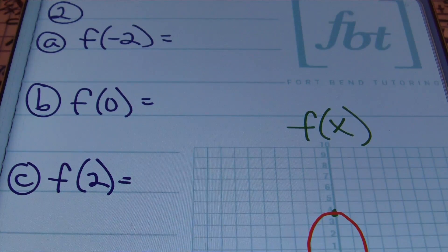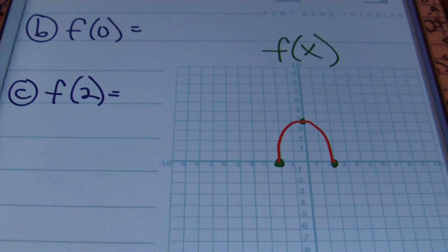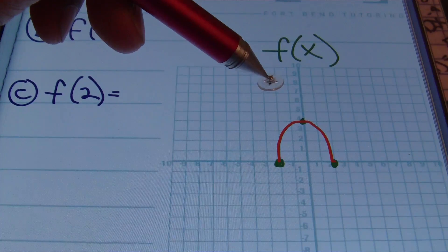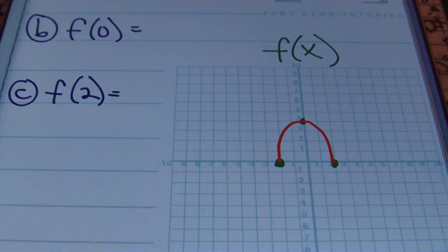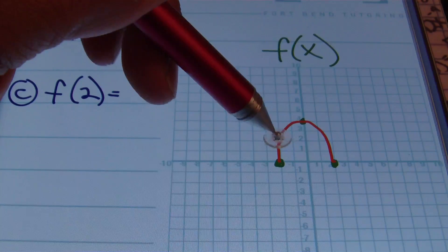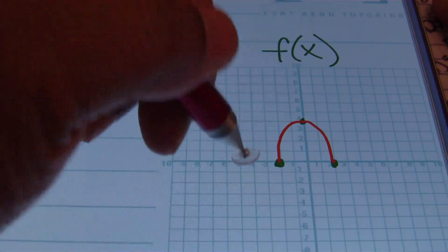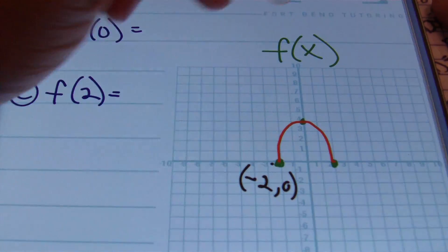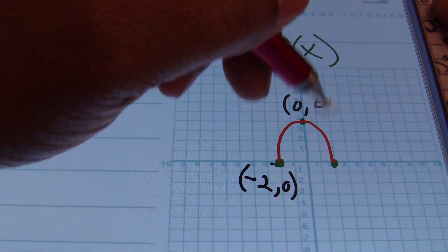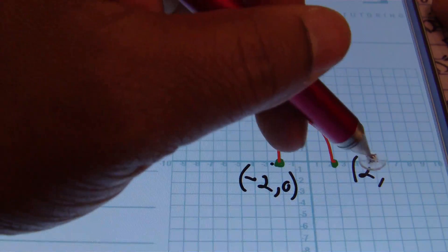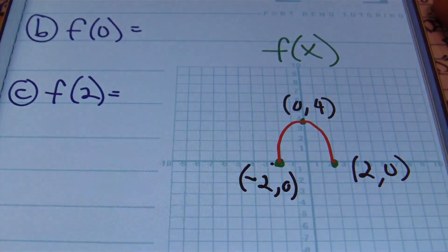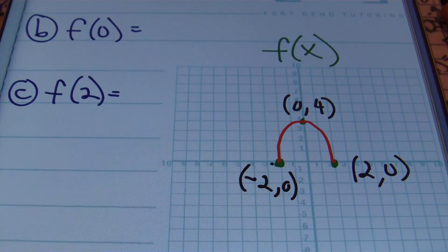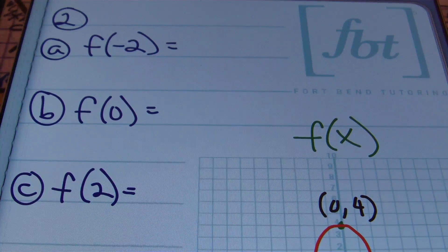In example 2, we're given a function f as a graph — notice they give us an upside-down U shape, or part of a negative parabola. We're given specific points on the graph: a point at negative 2, 0; a point at 0, 4; and a point at 2, 0. That's what we need to know because look at what they're going to ask us in part A — they want to know what f of negative 2 is.